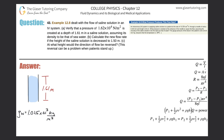Number 43. Example 12.8 dealt with the flow of saline solution in an IV system. Letter A: verify that a pressure of 1.62 times 10 to the 4 newtons per square meter is created at a depth of 1.61 meters in a saline solution, assuming its density to be that of seawater.